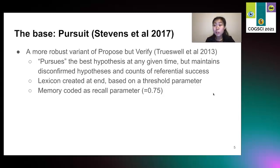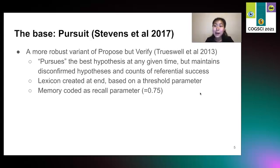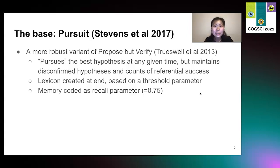The base for our local model is Pursuit, which is a more robust variant of Propose but Verify. Like Propose but Verify, the model pursues the best hypothesis at any given time. But unlike the original model, Pursuit maintains disconfirmed hypotheses and counts of referential success. The lexicon is created at the end based on a threshold parameter that has been tuned, and memory is coded as a recall parameter set to 0.75. This means that 75% of the time the model can access its memory, and the other 25% it randomly guesses.